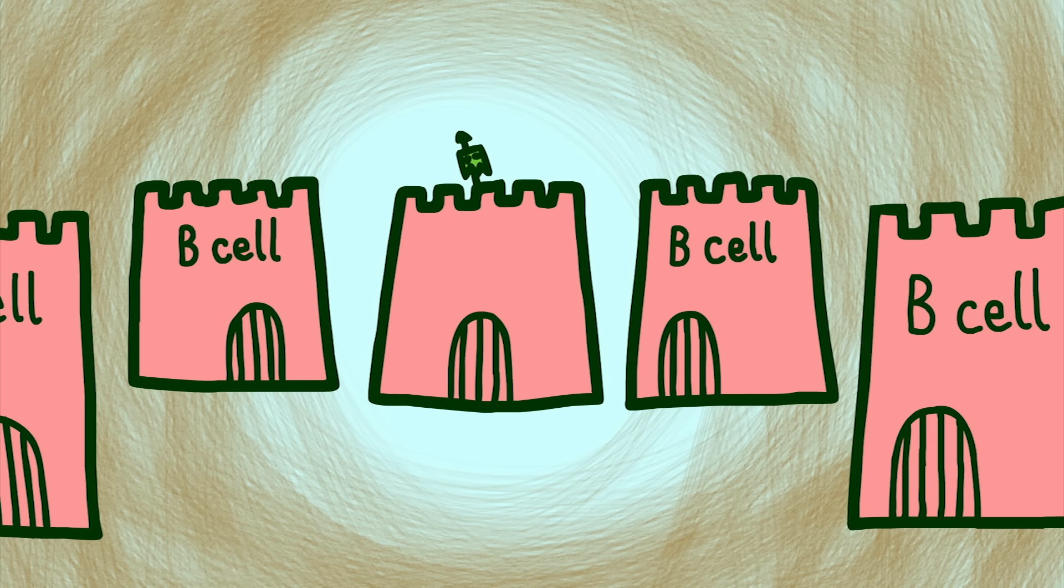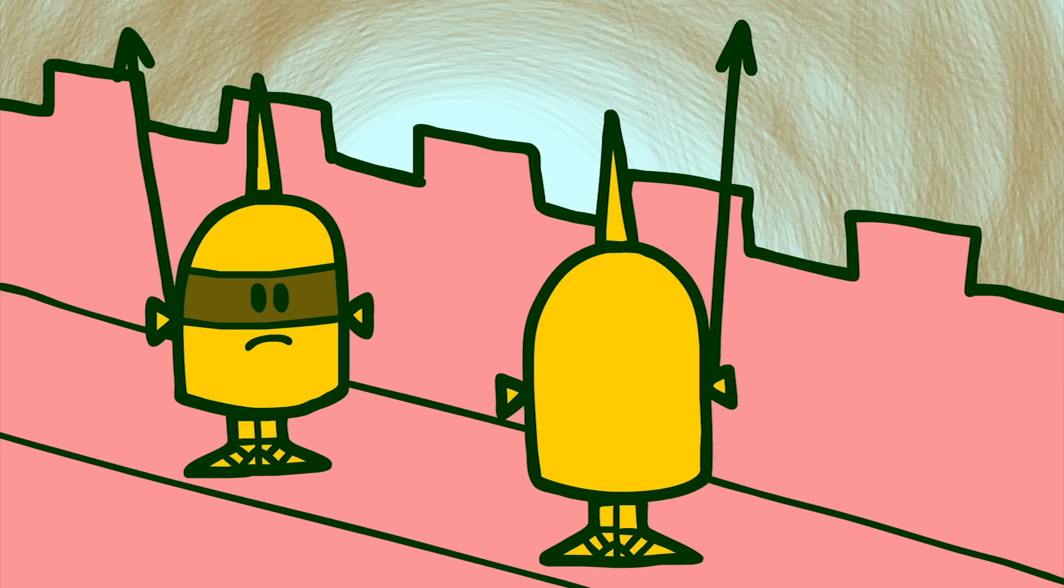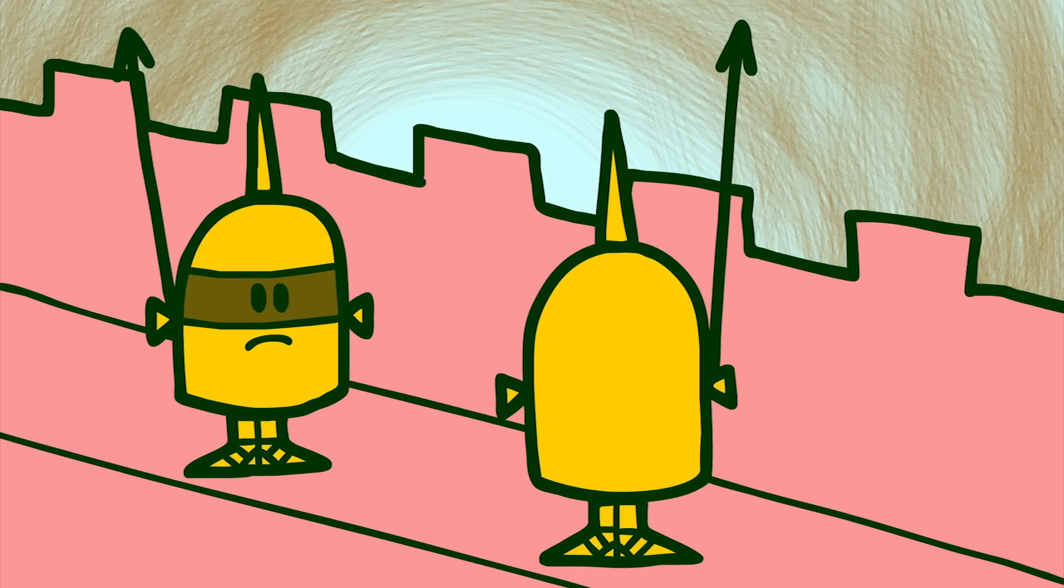Special enzymes arrive at the scene and chop the virus to pieces. They then send one of the pieces back through the cell membrane, where the cell displays it to warn neighboring cells about the invader. A nearby cell sees the warning and immediately goes into action.